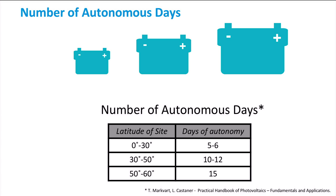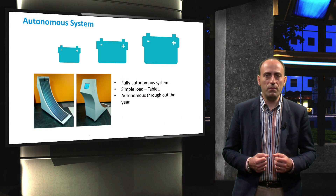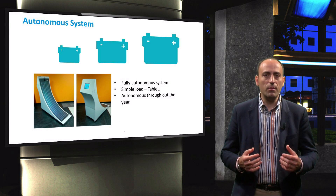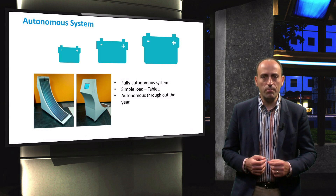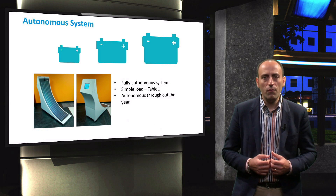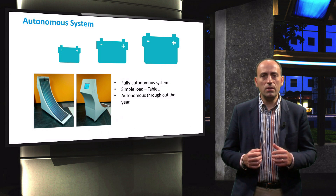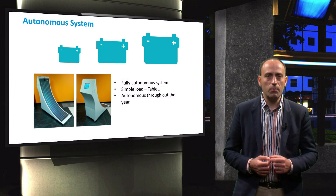For standalone PV systems with small load demands, a fully autonomous system can be more easily achieved. Here we see a simple example of a standalone PV system — an infotainment spot that is fully powered by solar energy with a battery backup. The load is a simple tablet that requires only a few watts of power to operate. For any location in the Netherlands, this system is fully autonomous at all times with just a single battery as a backup.